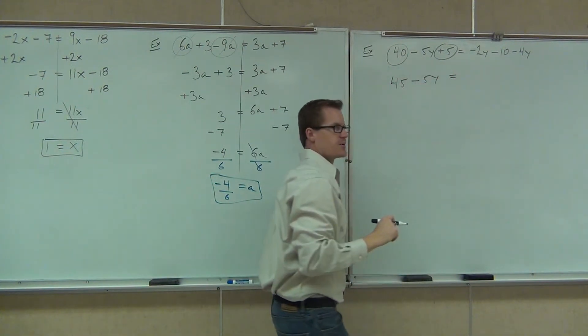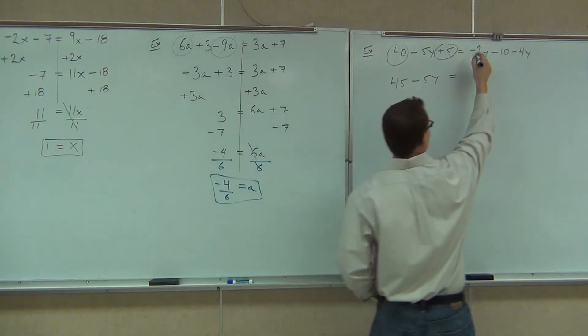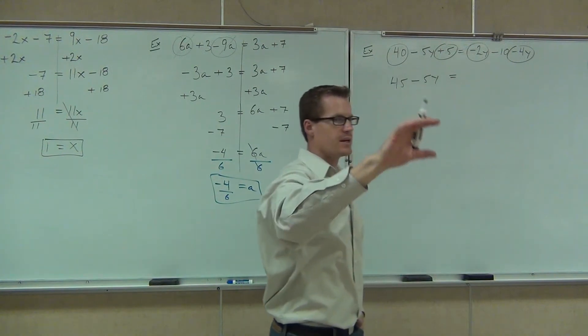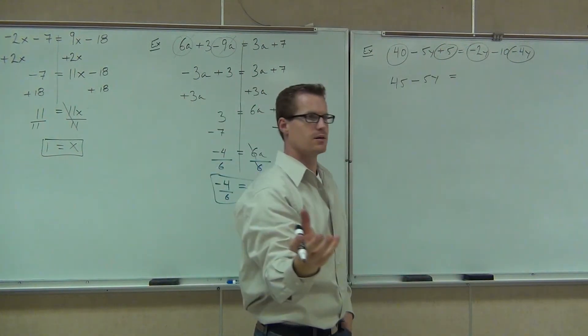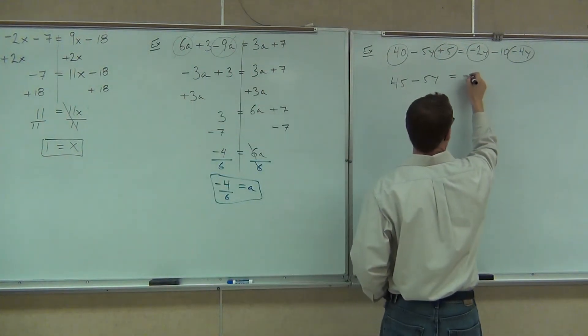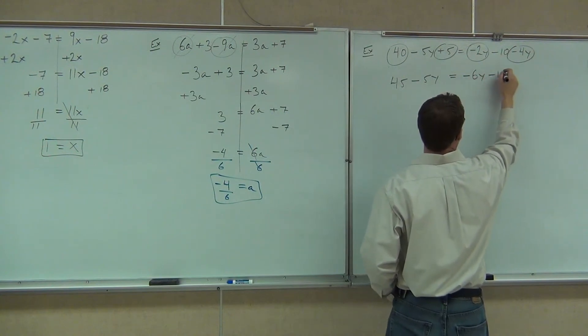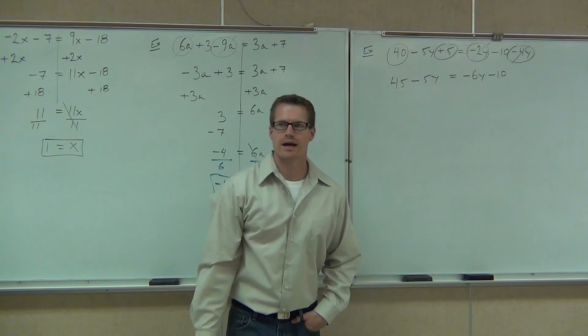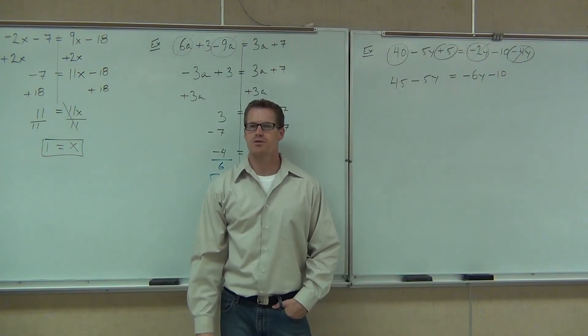And I still have a minus 5y that's got to be there. On the right-hand side, do I have any like terms? Yeah, I see them. Negative 2y and negative 4y. Perfect. If I combine my negative 2y and my negative 4y, I get negative 6y minus 10. Perfect. Do I have any more like terms to combine? No. Okay.